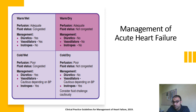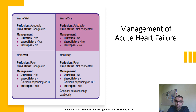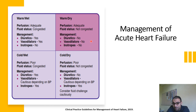Now we discuss the management of acute heart failure. We first highlight the normal state where the patient is warm and dry: perfusion of blood to tissues and organs is adequate, there is no congestion or fluid accumulation, and no medication is needed. We then consider what abnormalities can happen — in perfusion, fluid status, or both.